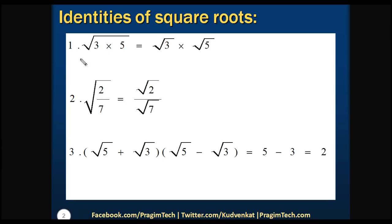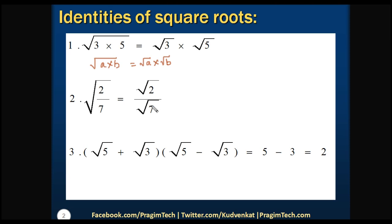The first example is square root of 3 into 5 is equals to square root of 3 into square root of 5. From this we can recollect the identity: square root of a into b is equals to square root of a into square root of b. The second example is square root of 2 by 7 equals square root of 2 divided by square root of 7, giving the identity: square root of a by b equals square root of a divided by square root of b.